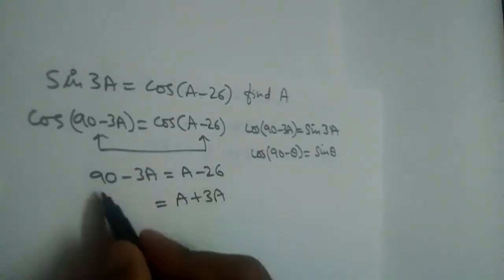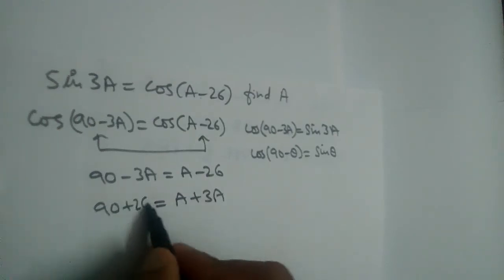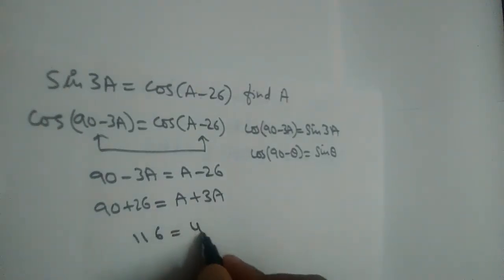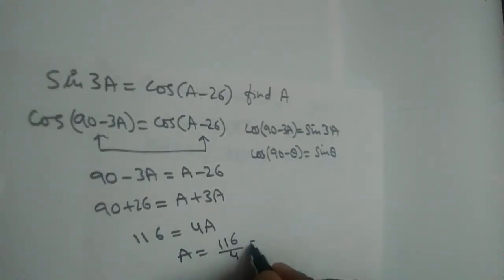This 26 goes here and becomes plus 26. So 90 + 26 equals 4a. 116 equals 4a, so a will be 116 divided by 4, which is 29 degrees.